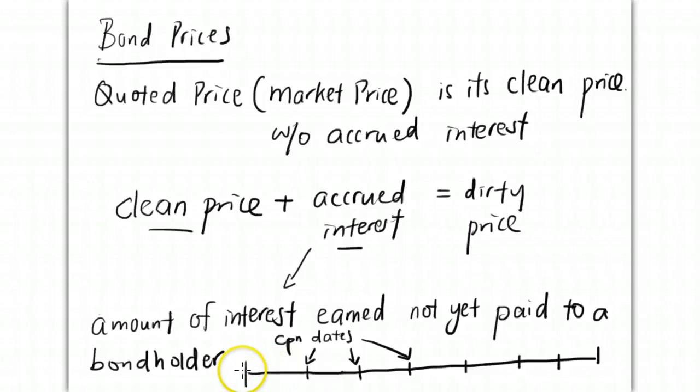For example, if we have a timeline of a bond with markings representing coupon dates, and at a particular date the bond is sold to another holder, the portion before the sale represents interest earned by the previous bondholder. The old bondholder is entitled to this accrued interest, and only from this point onwards is the new bondholder entitled to it.